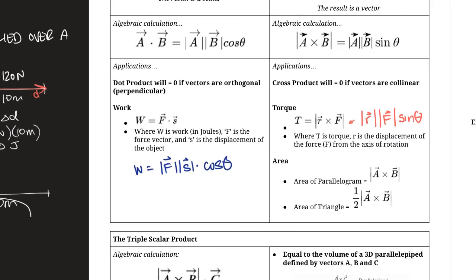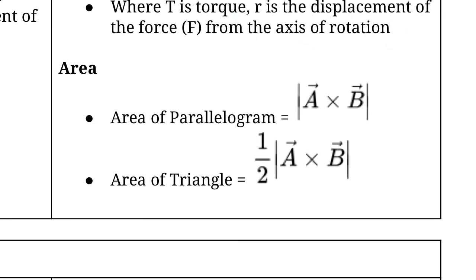Work is a dot product and torque is a cross product. When torque is applied at 90 degrees, it simplifies to distance times force; when force is in the same direction as displacement for work, it simplifies to force times displacement. Physics typically teaches the simplified versions. Another application of cross product — a useful one for geometry — is finding the area of a parallelogram.